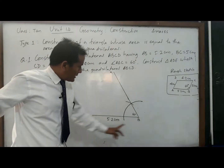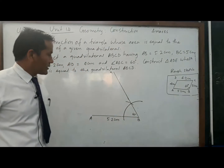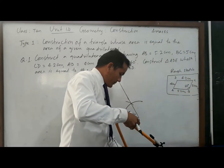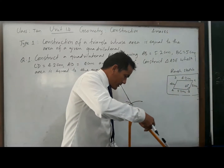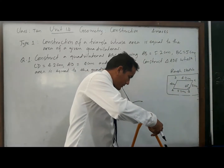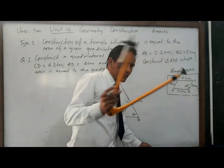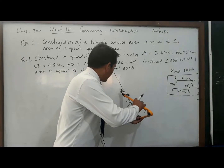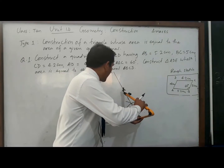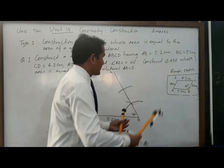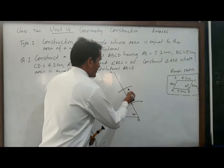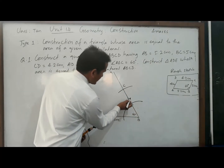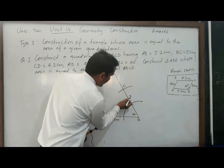Now with the help of a scale, measure 5 cm. This radius must be 5 cm — cut the line BX at C. Give the name C to that point. So BC is now 5 cm.